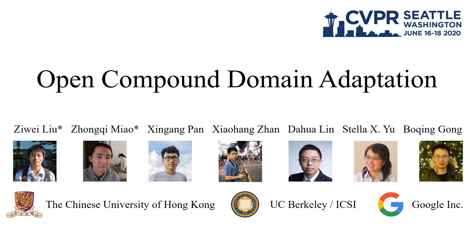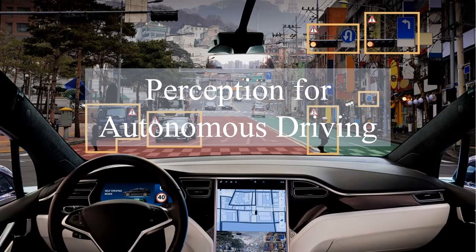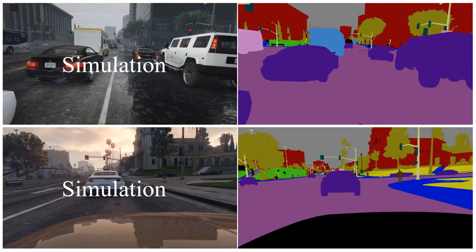We introduced and studied the Open Compound Domain Adaptation problem in this work. The perceptual system of self-driving cars aims to recognize the visual world reliably and robustly. Nowadays, people are leveraging simulation engines to generate massive training data for self-driving cars.